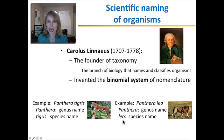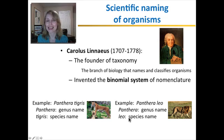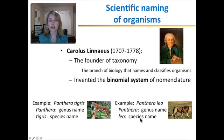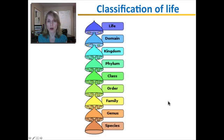Later in the year you will learn how scientists actually define what a species is. A genus and a species are different taxons — different groupings of organisms. Now let's look at some of the bigger groupings.